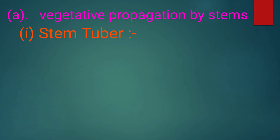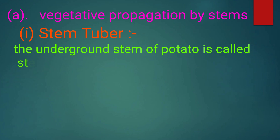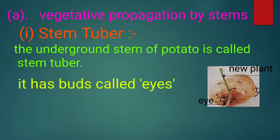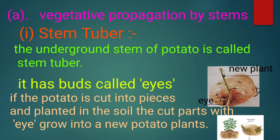Vegetative propagation by stem — stem tuber. The underground stem of potato is called a stem tuber. It has buds called eyes. If the potato is cut into pieces and planted in the soil, the cut part with an eye grows into a new potato plant.